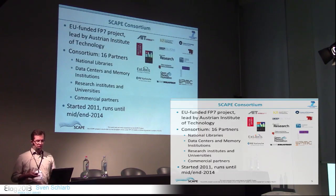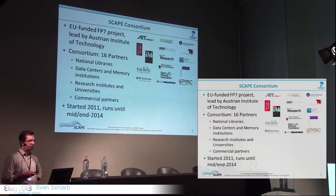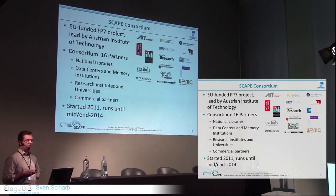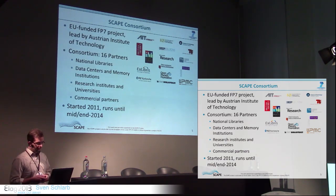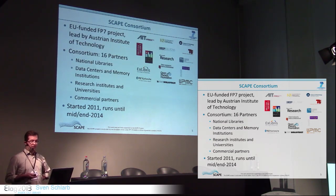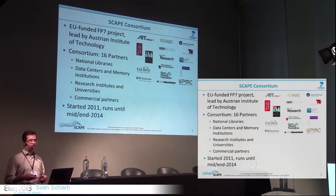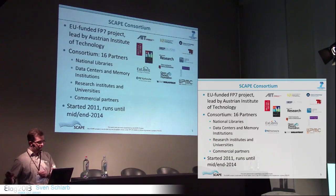This is where the SCAPE project comes into play. It's an FP7-funded project by the European Union, led by the Austrian Institute of Technology. We have 16 partners from national libraries, data centers, research institutes, and universities. The national libraries and data centers are the content holders; research institutes and universities develop new solutions; and commercial partners try to adopt these solutions into their products. It started in 2011 and runs until approximately end of 2014.